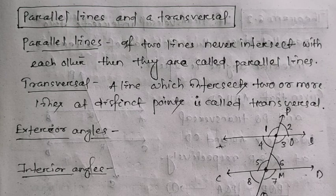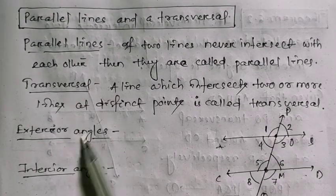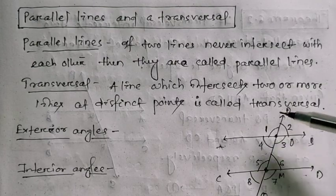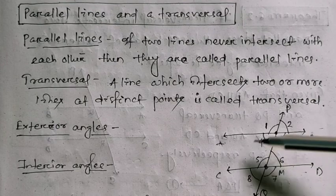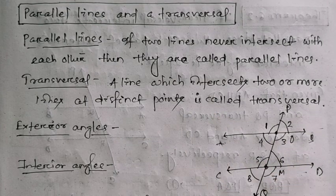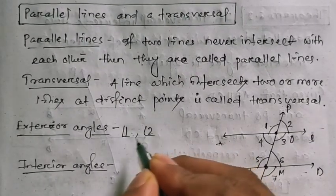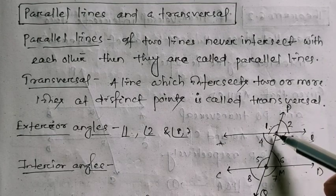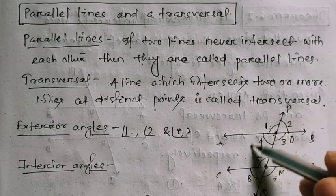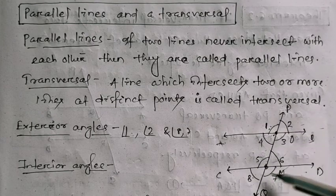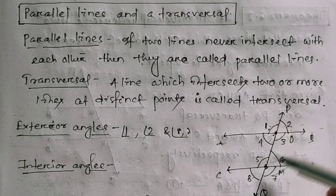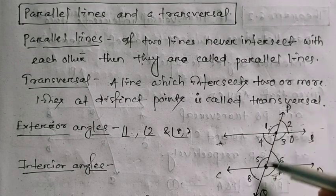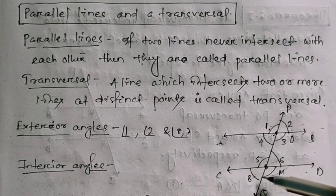Now we will understand exterior and interior angles using this figure. Exterior angles are those which are outside — that means angles 1, 2, 7, and 8 are outside the two lines, so this area is interior and this area is exterior. So angles 1, 2, 7, and 8 are exterior angles.